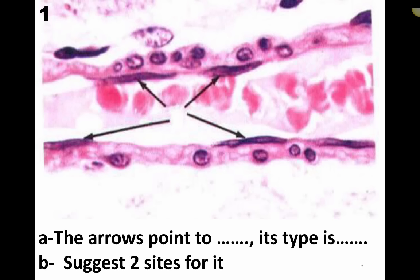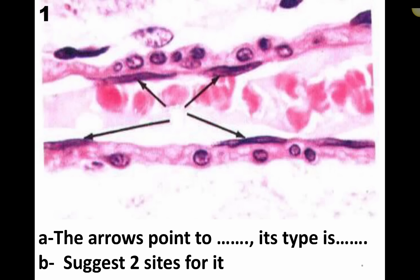Bismillah Rahman Rahim. This is the video for the rapid revision of cytology. The first picture shows the blood vessel - here we have the RBCs and here we have the lining of the blood vessel, which has a specific name called endothelium.